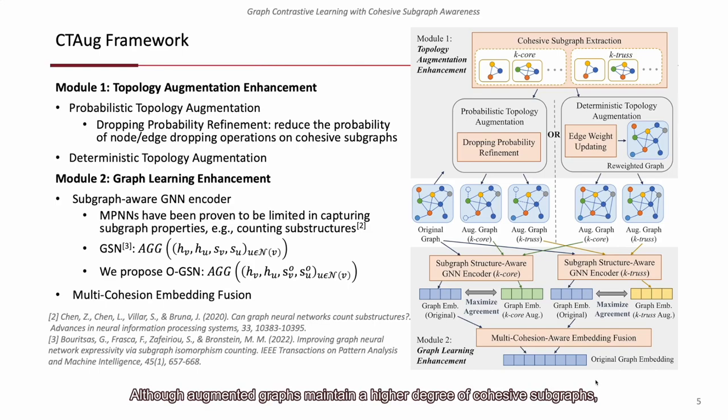Although augmented graphs maintain a higher degree of cohesive subgraphs, there remains a risk of losing subgraph information during the process of graph embedding. To tackle this, we propose an OGSN module that enhances the ability of GNN encoder to efficiently capture cohesive substructures when encoding graphs.